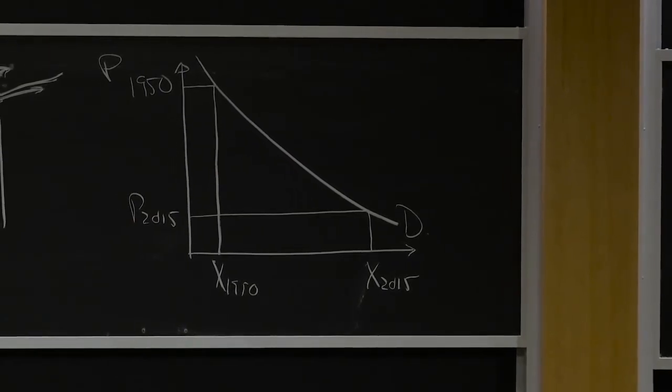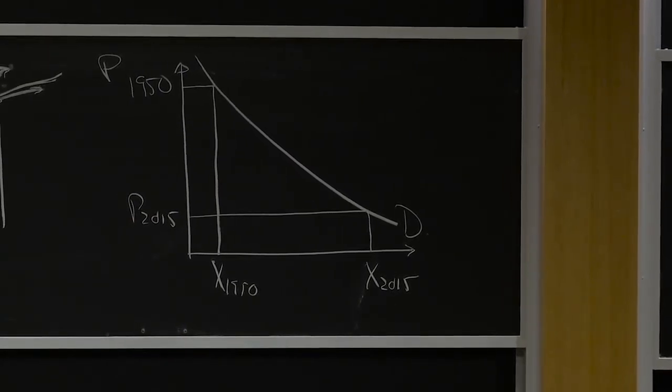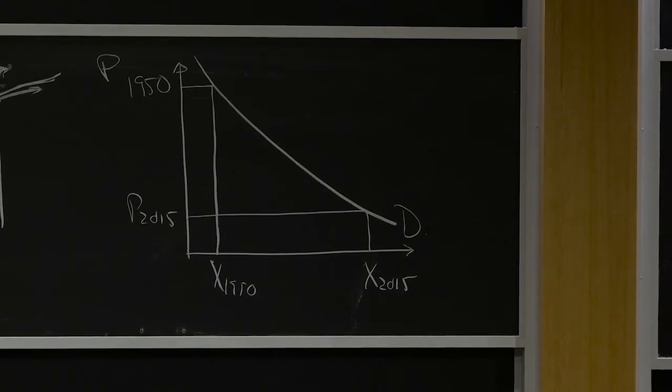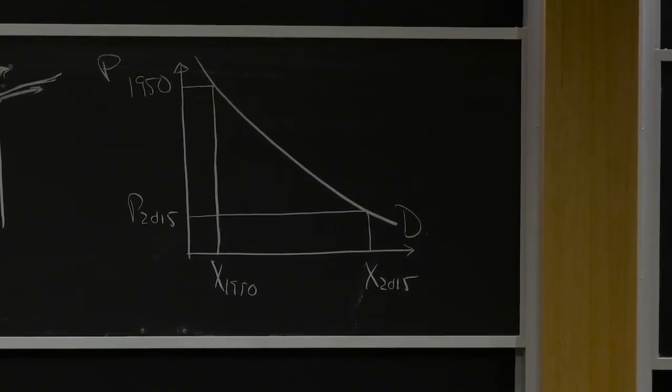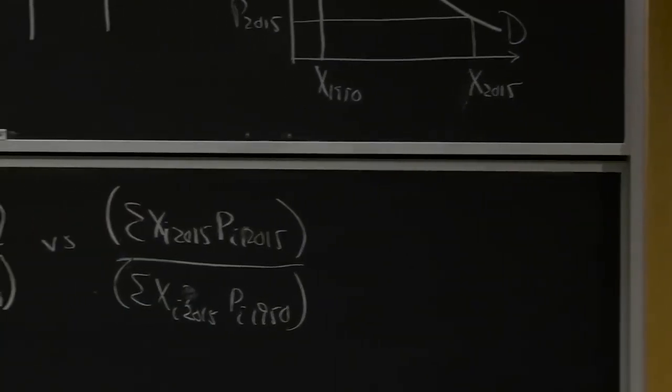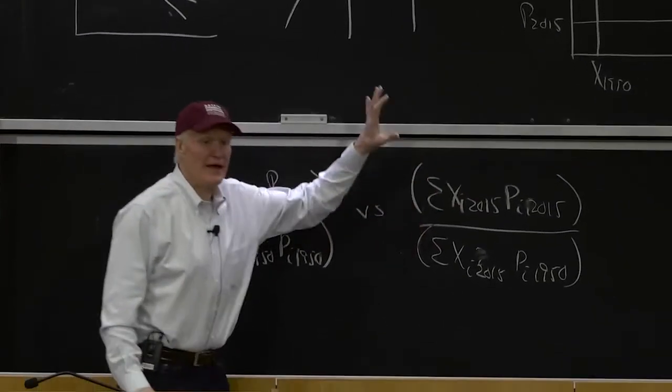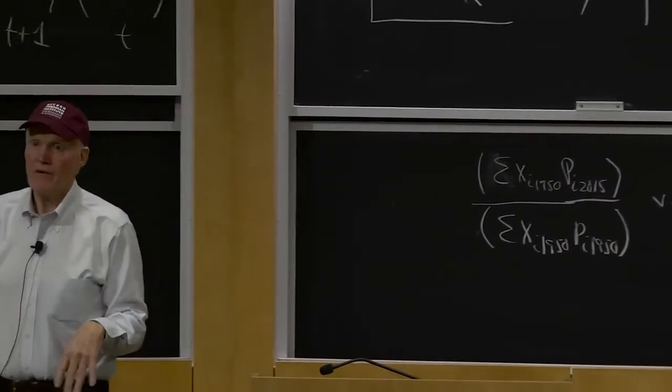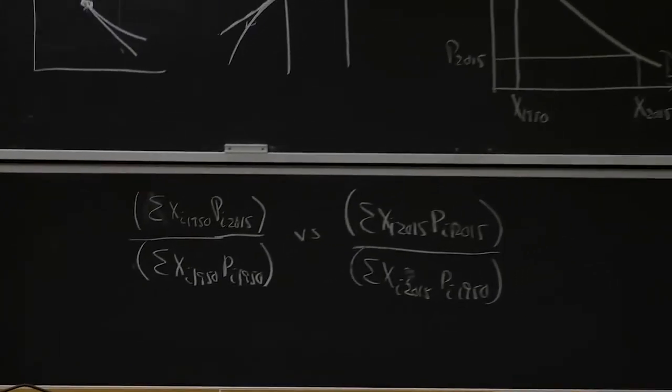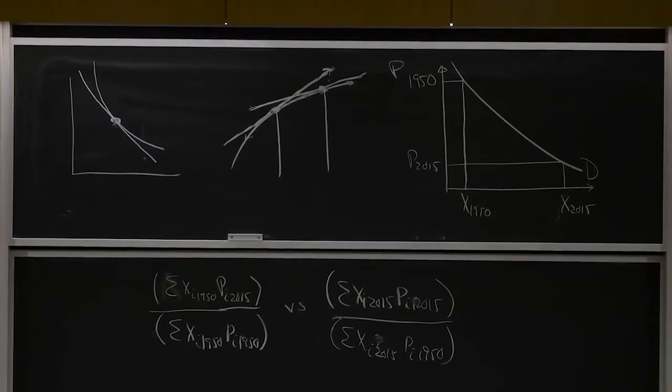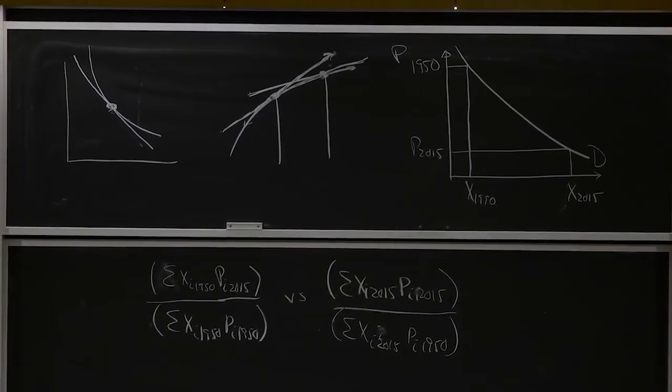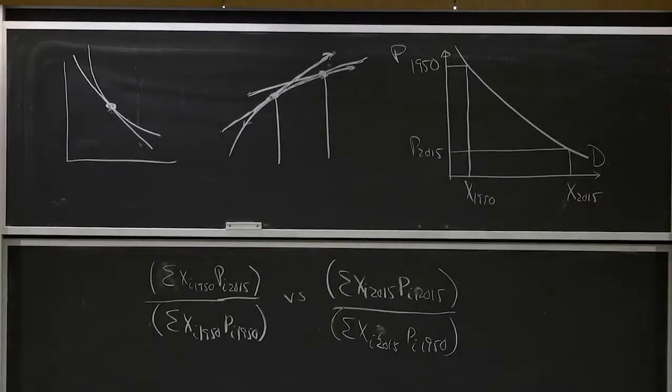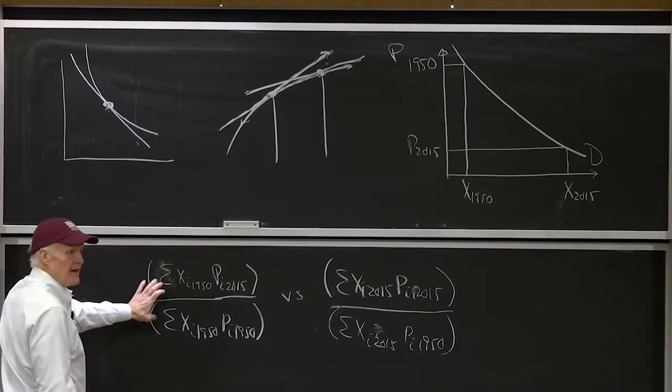So what would our price indices that we looked at originally do? These sort of naive price indices like this one or this one? How would they look if I used them in this picture? How would we measure the change in the cost of living under those two views of the world? What corresponds, for example, to the 1950 index?